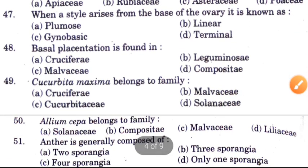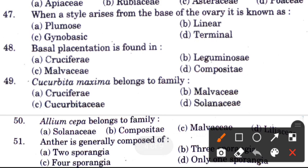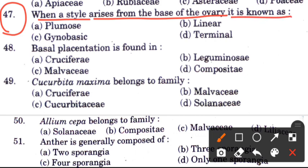Question 47: When a style arises from the base of the ovary, it is called — options are plumose, linear, gynobasic, and terminal. The answer is C, gynobasic.